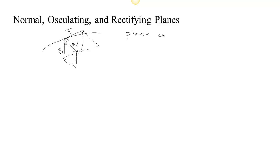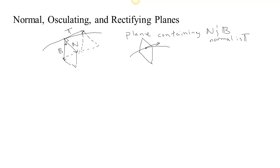First, the plane containing N and B — if you think about that plane, its normal is the unit tangent T. Which means the curve is breaking through that plane perpendicularly. So the unit tangent is perpendicular to that plane, and as the curve passes through that plane, it is going through it perpendicularly. Therefore, we call this the normal plane — normal because the curve is actually normal to it.